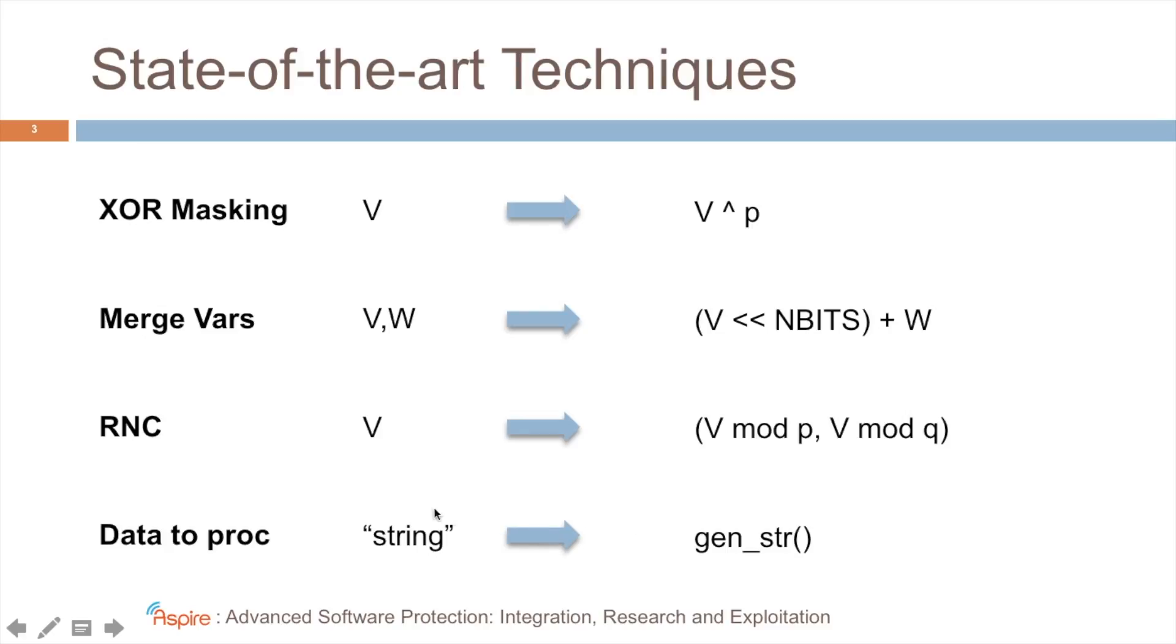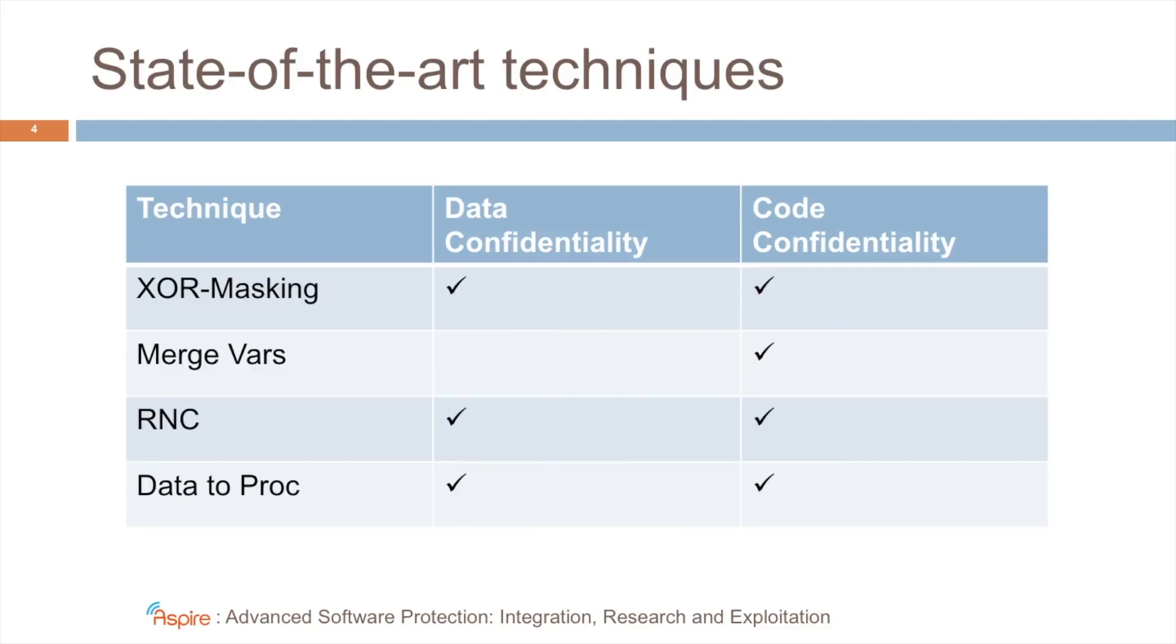And then the final protection was the conversion of data to procedural code. For example, a string occurring in your code, you're going to replace it with a function invocation, and that function reconstructs the string while the program is executed. With these techniques, we can already, to some extent, cover the security requirements that we need to cover.